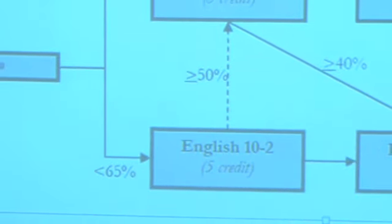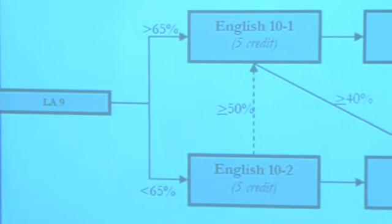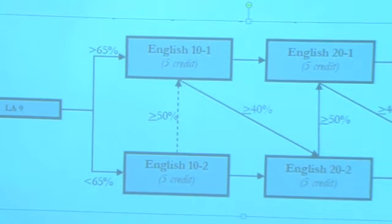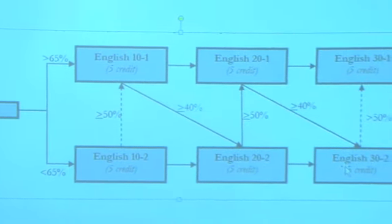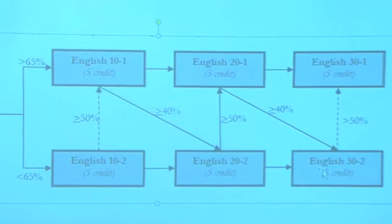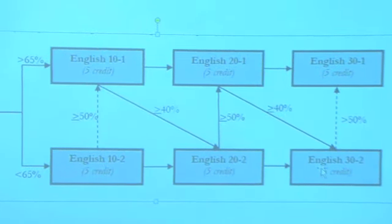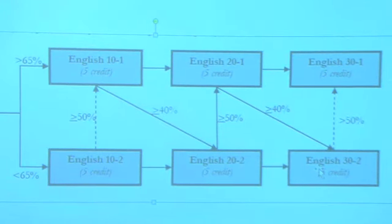But the most important difference is what each course stream enables you to do after high school. If you don't yet know what you want to do after high school and your mark is 65% or higher, then you are probably better off in the academic Dash-1 stream, at least for grade 10, as the Dash-1 stream will give you the most options when you graduate.